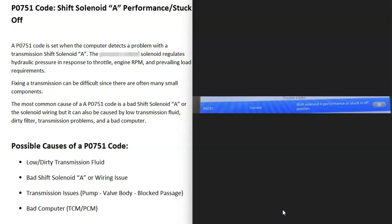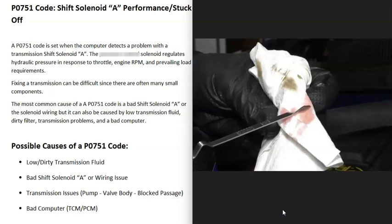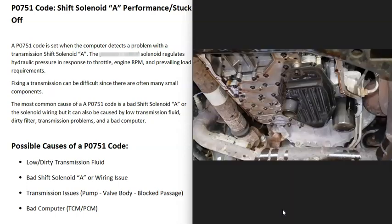One possible cause of a P0751 code is low or dirty transmission fluid. If your transmission fluid is low, that's going to cause issues, so check that it's at the correct level and add some if it's low. Some newer vehicles no longer have a dipstick, but if you can check it, do so. Dirty transmission fluid can also cause this problem, as can a clogged transmission filter.